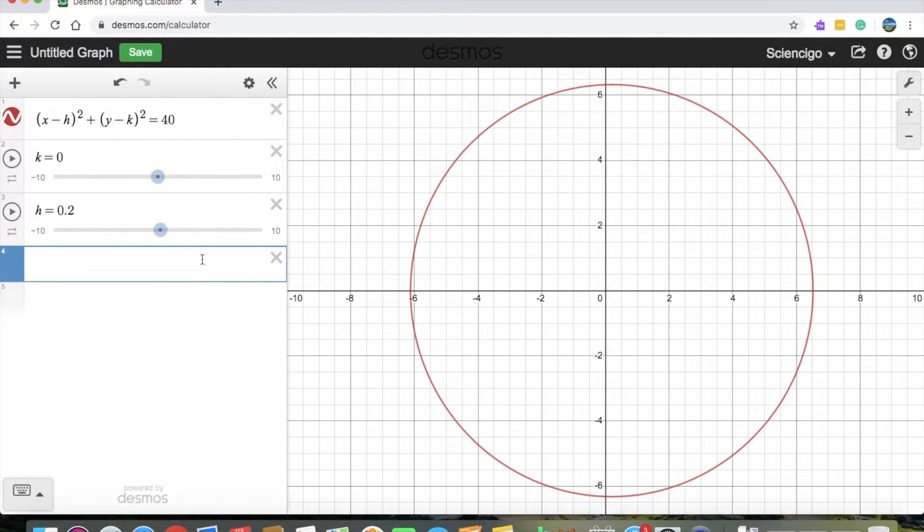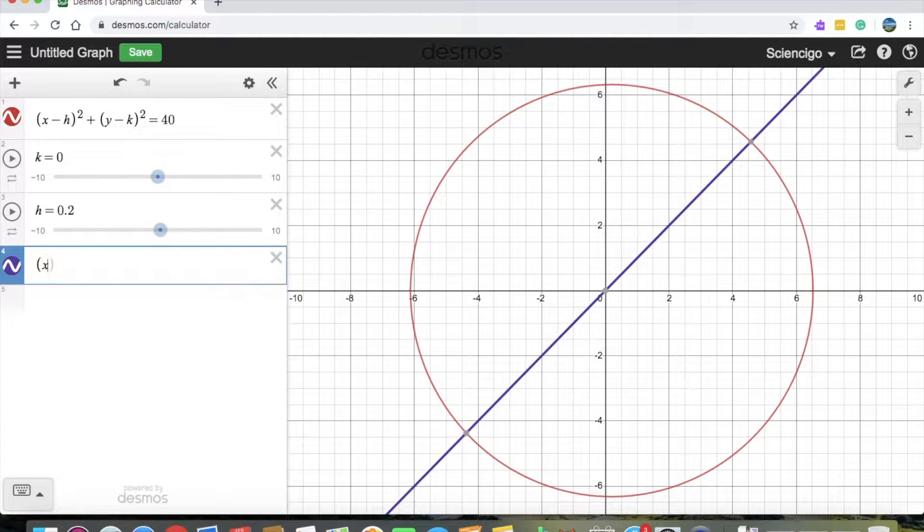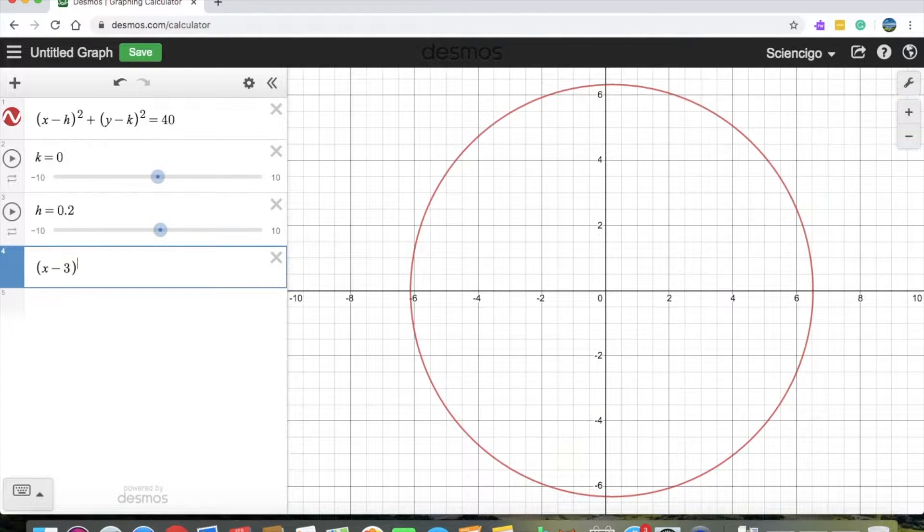Now we need to make some eyes. We will do the general equation of a circle again. So we see x minus the eye position which is 3 and 2. So we do (x - 3)² plus y minus... We see the eye positions again. So this time it's 2. So minus 2. We put a square which equals let's say 1.8. That's decent enough.